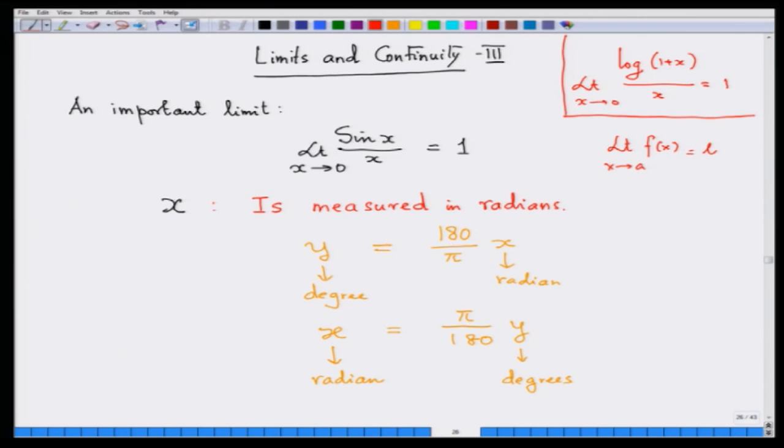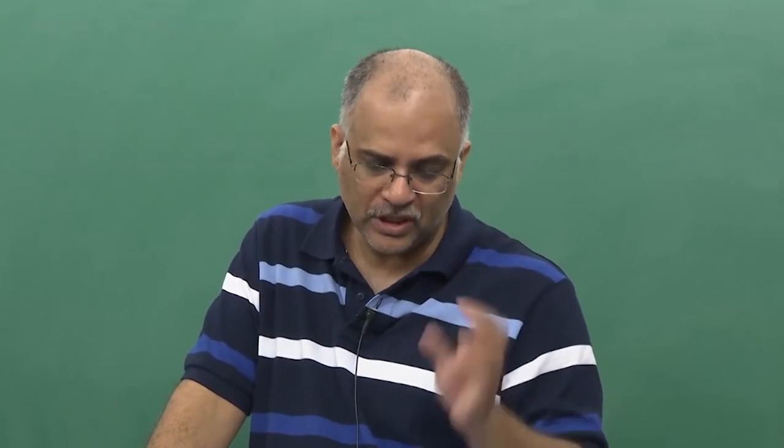It has a numerical value, but at 0 it is meaningless because it will become 0 by 0, but it still has a finite limit. This is f(x), this is your a which is not in the domain of this function, your 0 is a here, and l is 1 here. We are going to give you a very small geometric proof of this fact. It is important to understand that whenever in trigonometry we are talking about sin x, cos x, tan x whatever, this x is measured in radians.